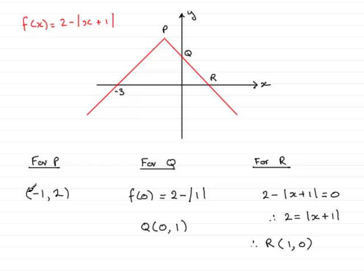Okay, so we have our three coordinates. We have p is minus 1, 2, q is 0, 1, and r is 1, 0. And that brings us now to the end of this part of the question.